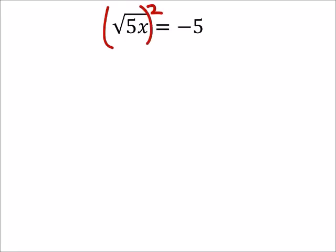But we can do this if we check as well, right, if we square both sides. Then we get 5x equals negative 5 times negative 5 is 25.